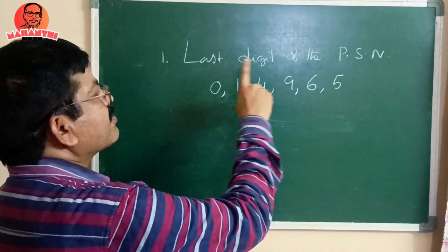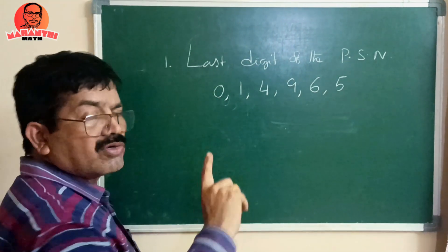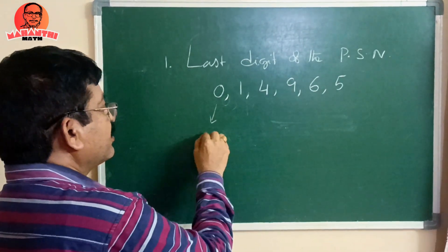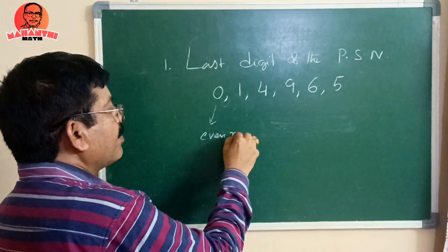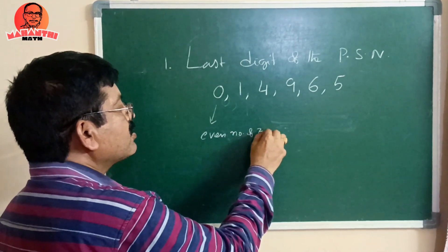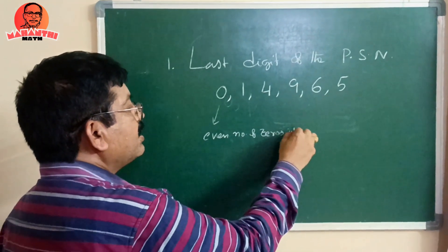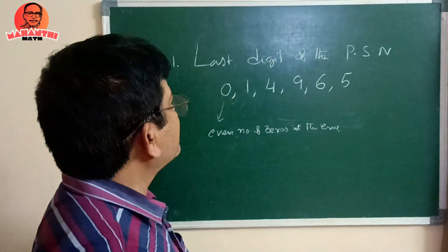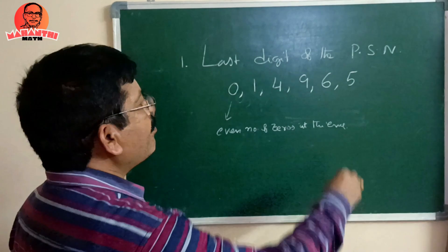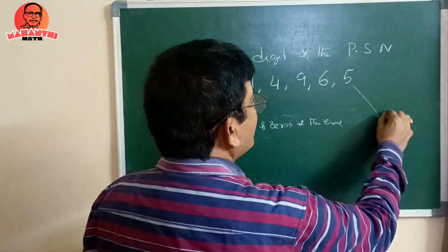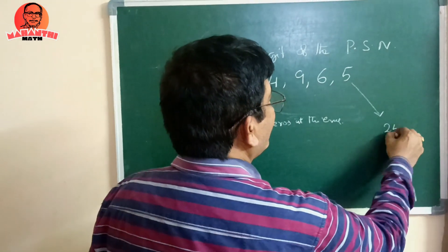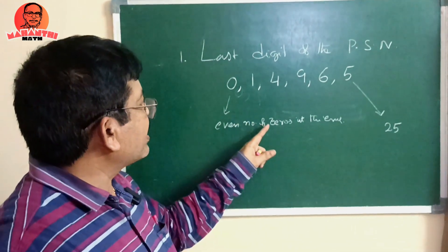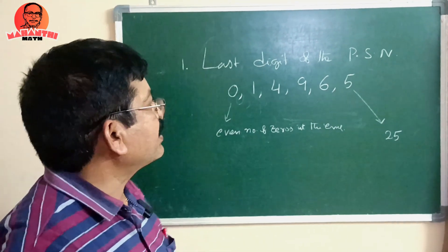A perfect square that ends with 0 should contain an even number of zeros at the end — this is the second property. Similarly, the third property: a number ending with 5 must end with 25 to be a perfect square.